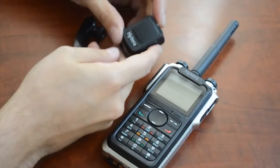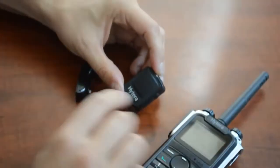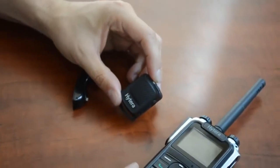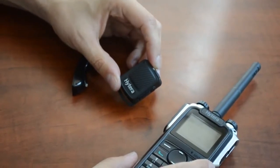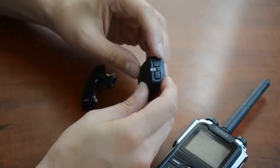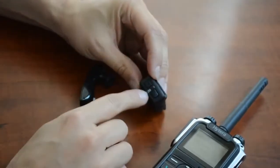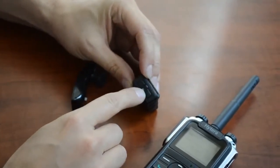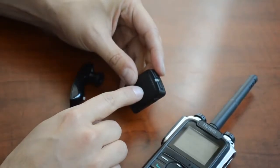Now this is the Hytera Wireless PTT which is model number POA47. To put it into pairing mode make sure it's off and then you're going to press the plus and minus buttons on the top along with the push to talk button.